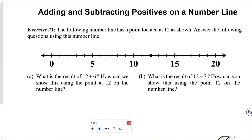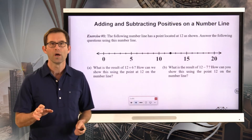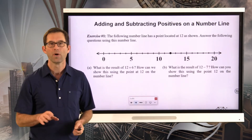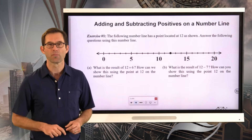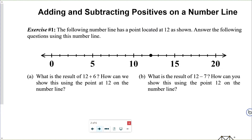Adding and subtracting positives on a number line — this is literally what's happening when we have a number plus a positive number or a number minus a positive number. Exercise number one: the following number line has a point located at 12. Answer the following questions using this number line. Letter A: what is the result of 12 plus 6?